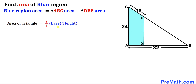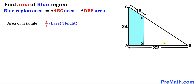Let's recall the area of a triangle formula: area equals one-half times base times height. If we focus on this big triangle ABC, our base is 32 and our height is 24. However, for this smaller triangle DBE, we don't know the base or the height. Let me call its base x and its height y, and we are going to calculate x and y before we calculate the area of triangle DBE.